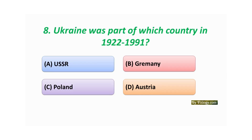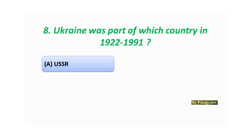Question number eight: Ukraine was part of which country from 1922 to 1991? Option A: USSR. Option B: Germany. Option C: Poland. Option D: Australia. The correct answer is Option A: USSR.